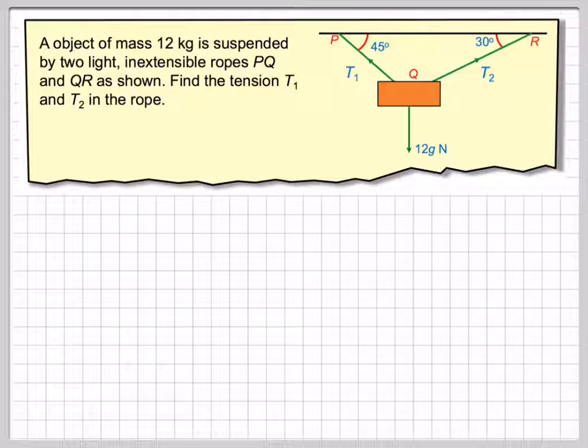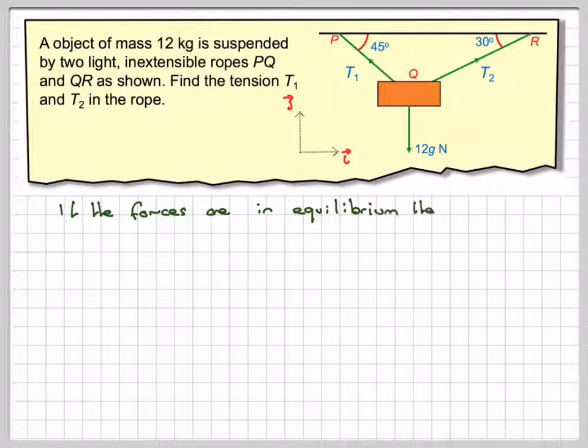So I'm going to show you three different ways of doing it. If we introduce the i and j vector components, if the forces are in equilibrium, there's no movement, the resultant will be equal to zero. There will be no net force.